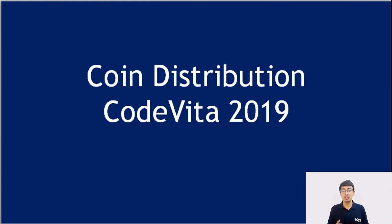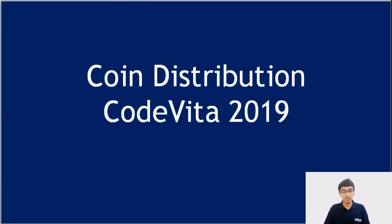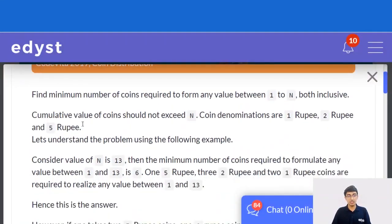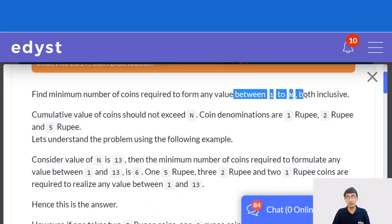The question is about coin distribution. It was asked in CodeBeta 2019, Zone 1, and there was some confusion about this question yesterday. Let me clear that confusion and then we'll quickly move on to the next question. For those of you who were on my session yesterday, this might seem a little repetitive, but I'll cover this quickly so that we can go on to the next questions.